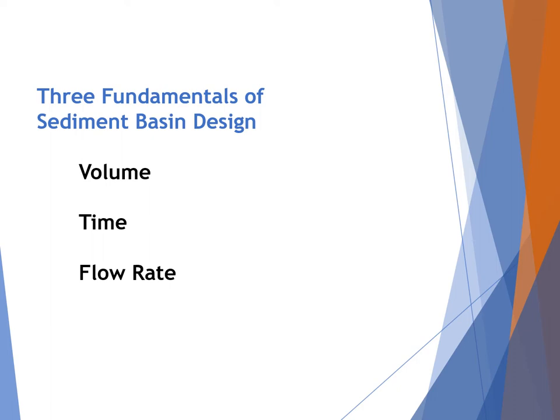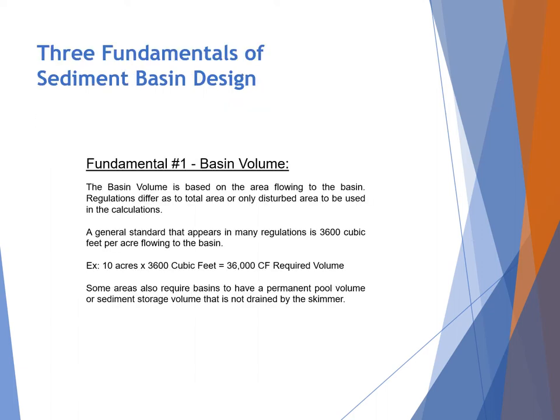We'll now discuss the three fundamentals of sediment basin design: volume, time, and flow rate. Fundamental number one is basin volume, which is based on the area flowing to the basin. Regulations differ on total area versus disturbed area, so check local state requirements. A general standard seen in many areas is 3,600 cubic feet per acre flowing to the basin. For example, 10 acres times 3,600 cubic feet equals a required volume of 36,000 cubic feet.